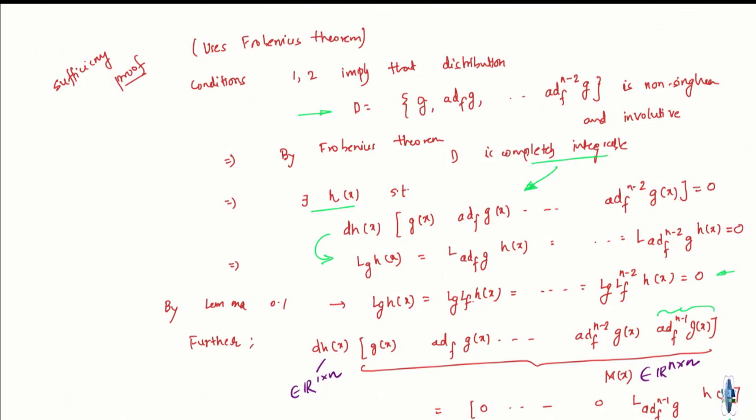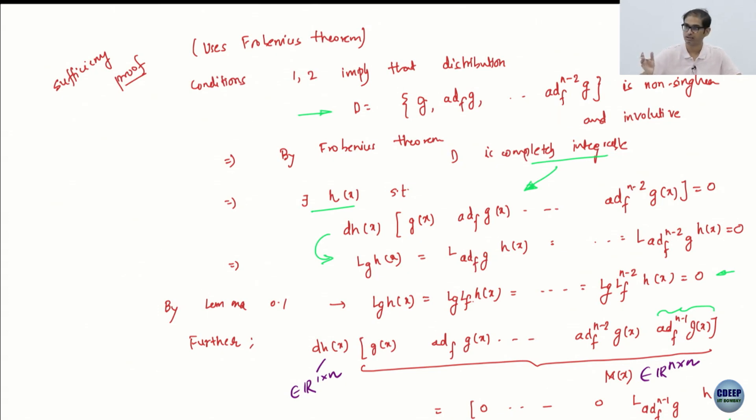We did a little bit of the proofs. I of course did not prove the key result — I left it for you to read, or maybe I'll do it at the end if there is time. But we looked at the key applications of the Frobenius theorem, which essentially says that involutivity and complete integrability of a distribution are equivalent.